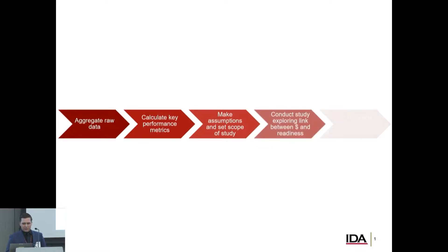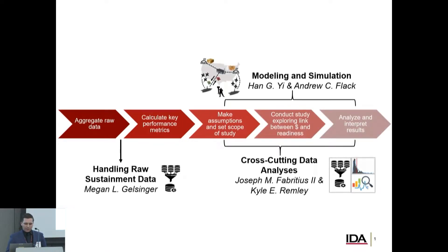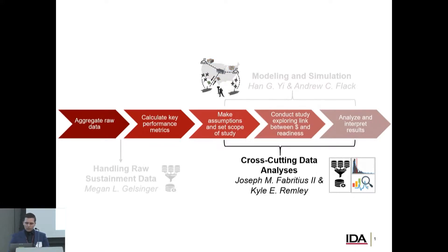By now, hopefully, we've shown that the readiness team brings a lot to the table. We have a steady and robust pipeline from data gathering and product creation. We have general analysis and methods for gathering all the varied sources of data into something useful, and how we use that for modeling simulations to pinpoint specific problems and solutions in the sustainment system. What we want to talk about now is stepping back and looking at the system as a whole — these cross-cutting data analysis techniques, which are conceptually simpler than the detailed simulations but no less powerful.